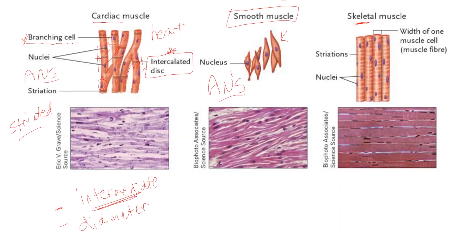Smooth muscles are also involuntary — they are controlled by the autonomic nervous system. Smooth muscles are smooth because they do not have striations; they do not have the striped pattern that skeletal and cardiac muscle fibers have. Smooth fibers are slow velocity, like slow twitch fibers. The diameter is very small, so they do not have a very strong contractile force, but they can last a long time and contract for long periods.